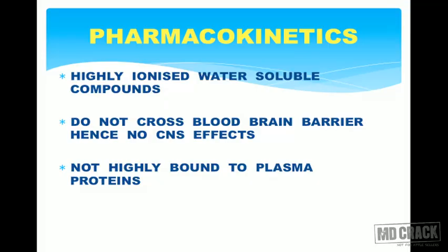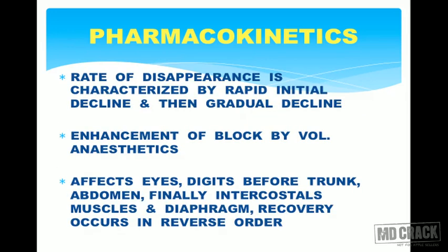Regarding pharmacokinetics, muscle relaxants are highly ionized, water-soluble compounds, so they do not cross the blood-brain barrier and have no neurological effect. They are very loosely bound to plasma proteins, which is why some of them are very rapidly excreted from the body.